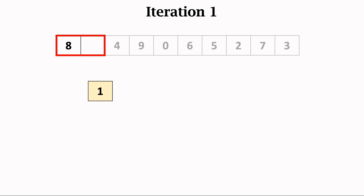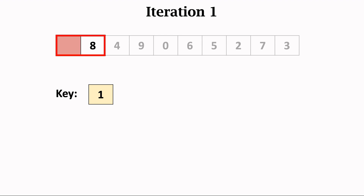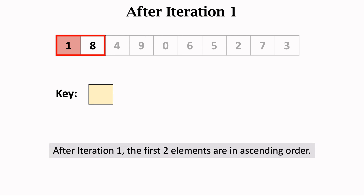Take the second element out of the array and let the element 1 be the key. Let's insert the key 1 into the red rectangle. We need to find the position for inserting the key, making sure the elements in the red rectangle are in ascending order. Compare the key 1 with the remaining element 8. Since 8 is greater than the key, move 8 one step rightward to make a room. Now there is a vacant position to the left of 8. Insert the key 1 into the vacant position. We have finished the first iteration. After the first iteration, the first two elements are in ascending order.